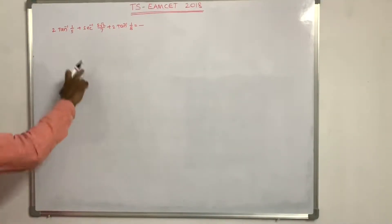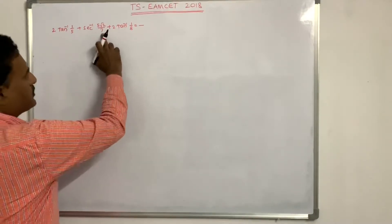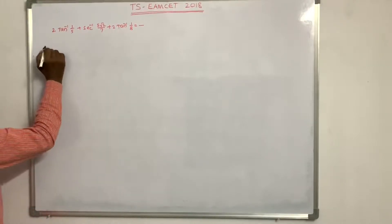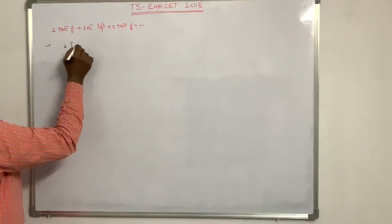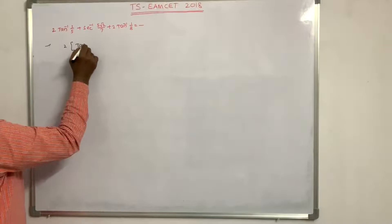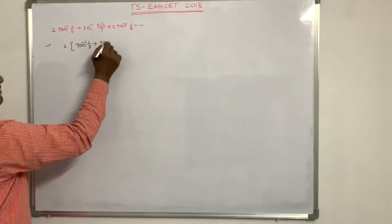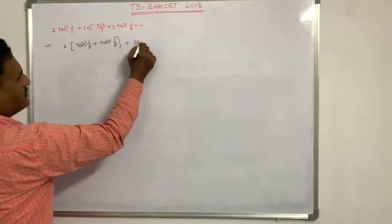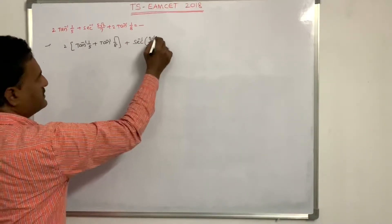2tan⁻¹(1/5) + 2tan⁻¹(5√2/7) + 2tan⁻¹(1/8) is equal to — take 2 common — 2 into [tan⁻¹(1/5) + tan⁻¹(1/8)] + 2tan⁻¹(5√2/7).